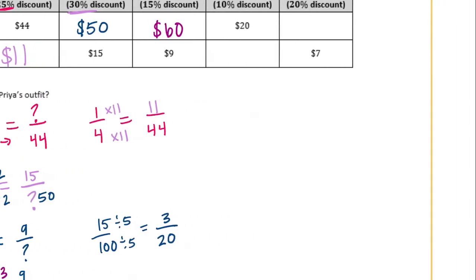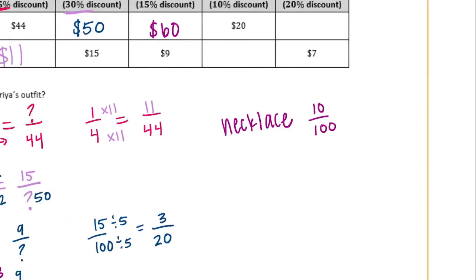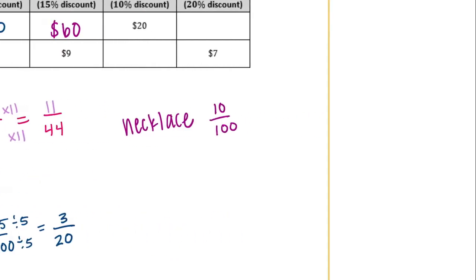Now the necklace: a 10% discount, which is 10 one-hundredths. The original price is $20, and we want to find the discount amount. I can get to 100 by dividing by 5, so 10 divided by 5 is 2. The discount was only $2.